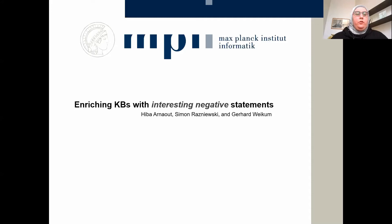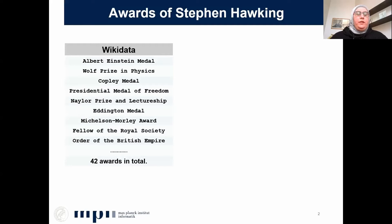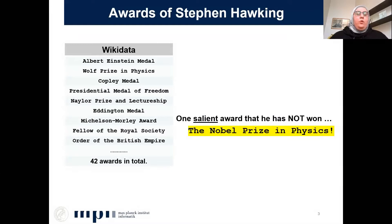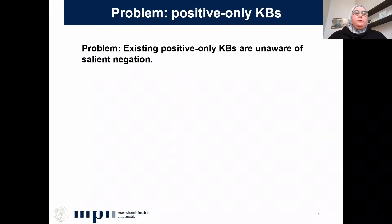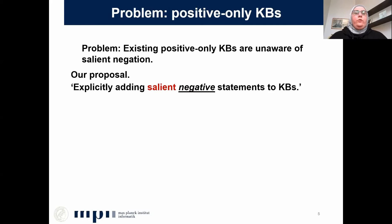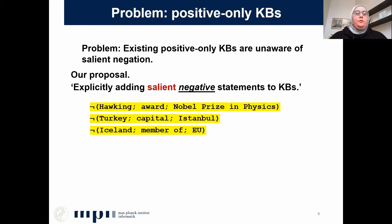Creating a knowledge base — for example, querying Wikidata about the awards of Stephen Hawking will return 42 awards that he has won. One salient award that he has not won is the Nobel Prize in Physics. Existing positive-only knowledge bases are unaware of salient negation. Our proposal today is to explicitly add salient negative statements to knowledge bases — that Stephen Hawking did not win the Nobel Prize in Physics, and that Istanbul is not the capital of Turkey.